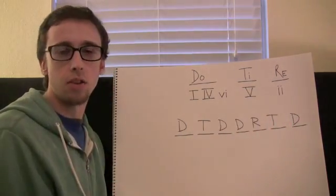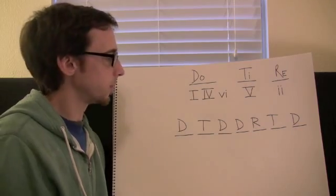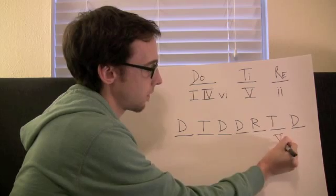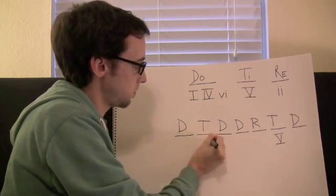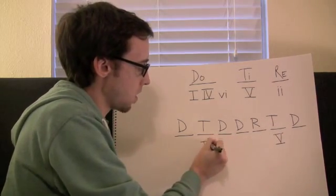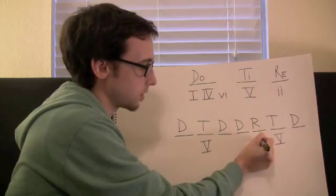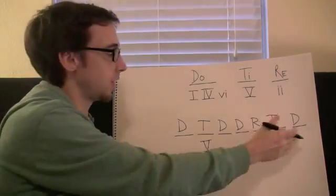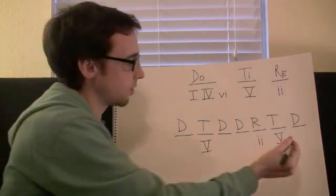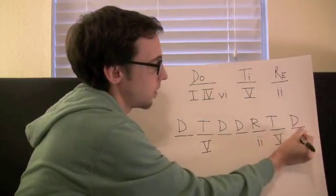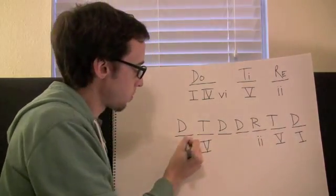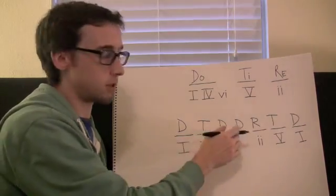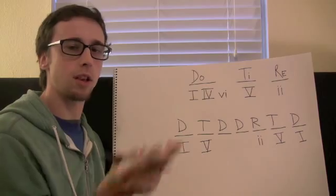Let's figure out our Roman numerals. Our T chord we know is a V, because that's our only choice. And we know our RAY chord is a II chord, since that's our only choice. We can also assume that our beginning and ending DO chords are I chords. So just through a process of elimination, we're able to figure out most of the Roman numerals, except for these two DO chords.